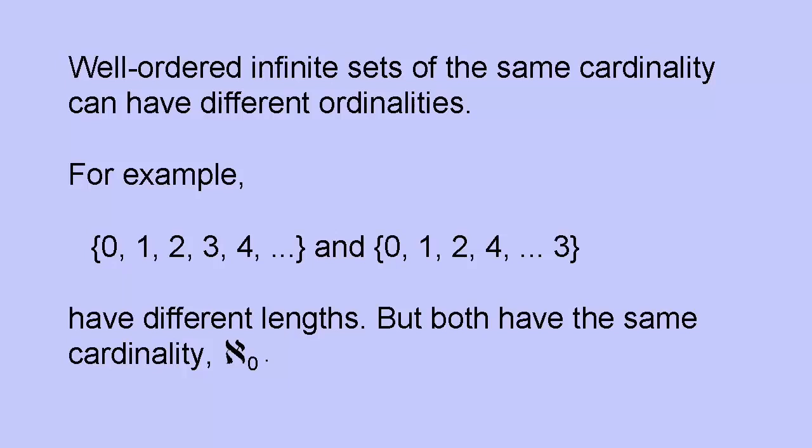At first, this doesn't seem to make sense. After all, if we were talking about finite sets, then it's obvious that {0, 1, 2, 3, 4} and {0, 1, 2, 4, 3} are identical in length because they both contain five members, but infinite sets are fiendishly counterintuitive.